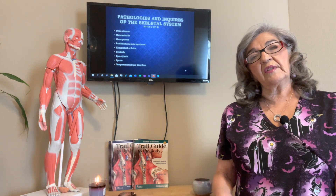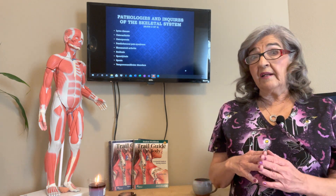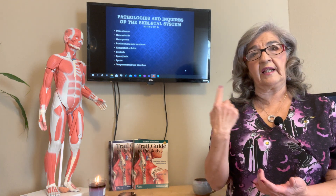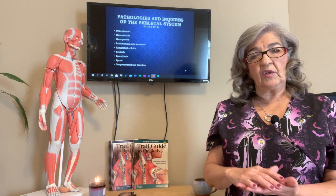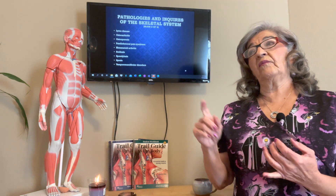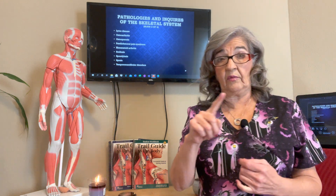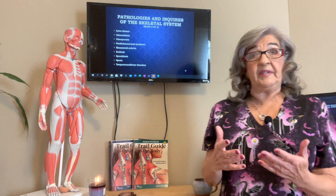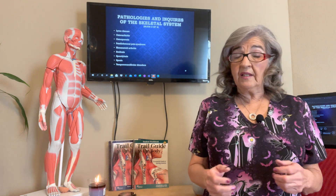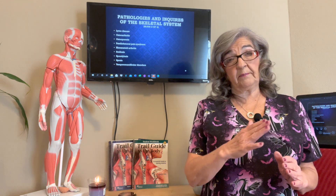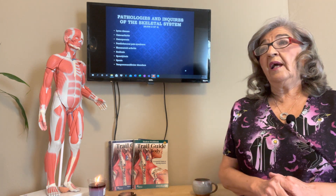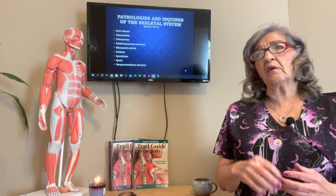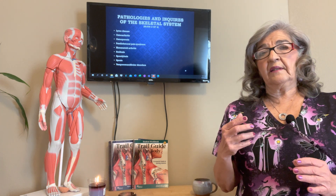Scoliosis is the S-curvature of the spine. Your spine has four curves — like a spring — for shock absorption. Scoliosis can be functional or structural. Functional scoliosis involves a discrepancy in leg length or one hip being higher than the other, causing the spine to accommodate and deform into an S shape. Structural scoliosis involves vertebral rotation, where the vertebrae actually start turning. It's a lateral curvature.